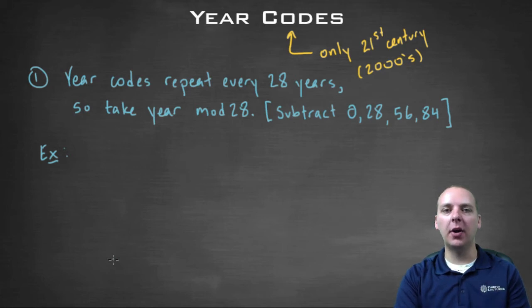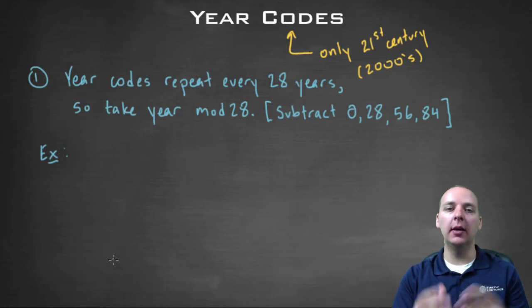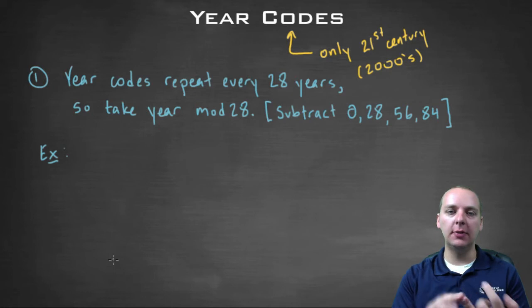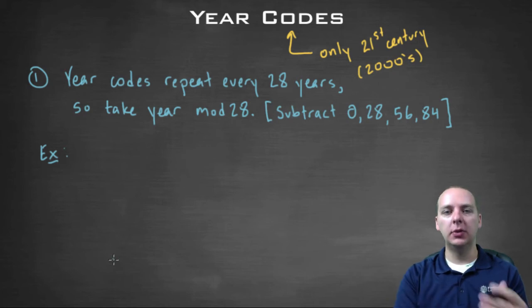In the last few videos in this series we've been talking about how you can take any date in history and convert it to what day of the week that calendar date fell on. We've already explained the algorithm in some previous videos, we've already talked about how to find day codes and month codes, and now we're at probably the most complicated part of the algorithm, which is computing the year code. This video is going to be a little bit longer, but we'll try to make this as easy as we can to follow.